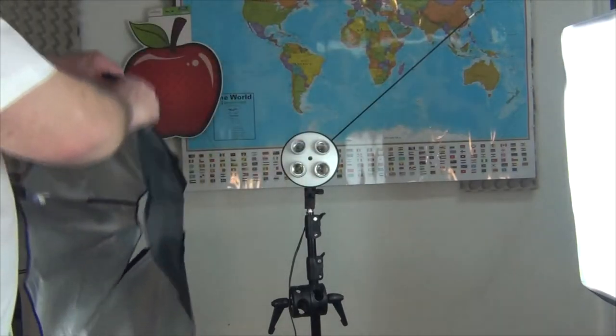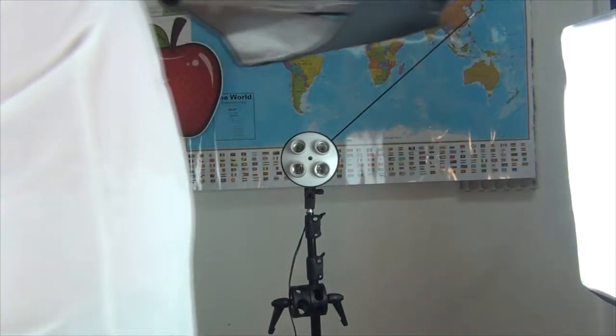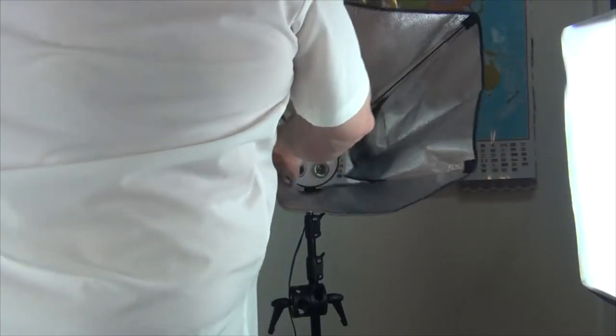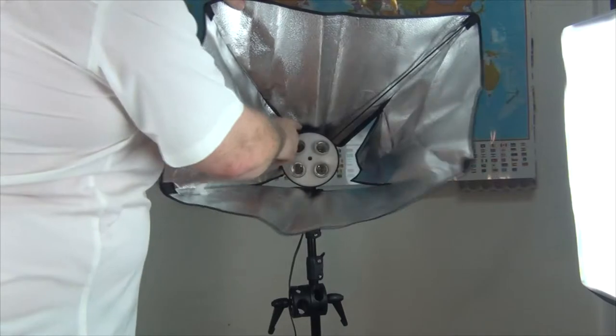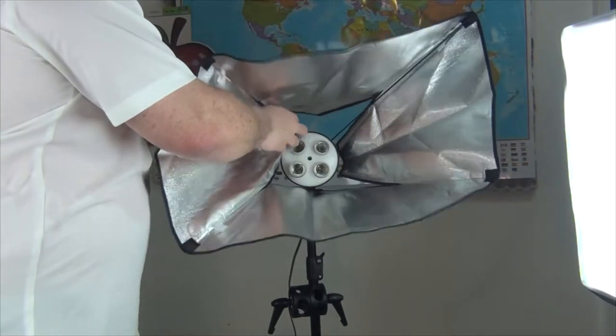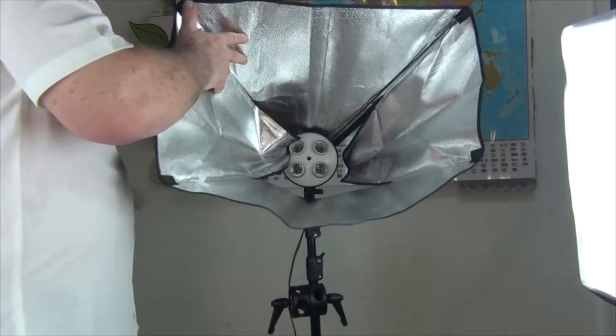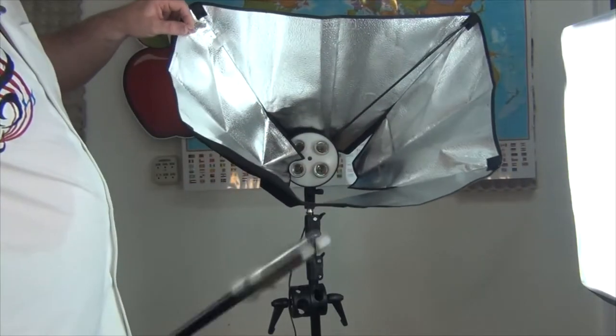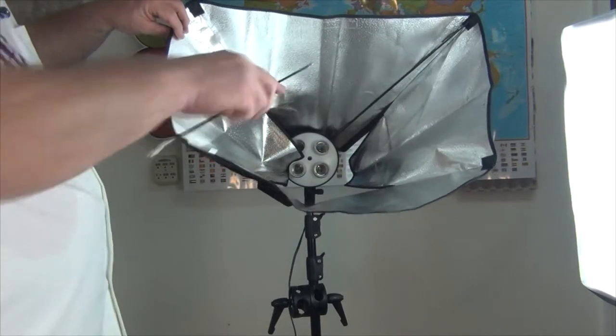So we have our first stick in place. Now you can see this Velcro tightened up on me. So I'm going to loosen it up again. We want to keep the Velcro loose. That makes it the easiest to work with. And make sure I put the correct side of the stick into the light head.